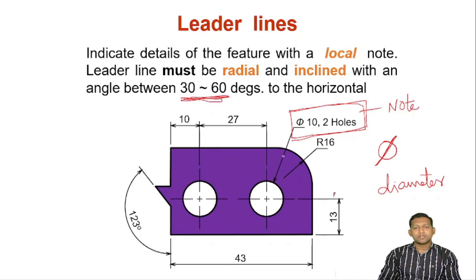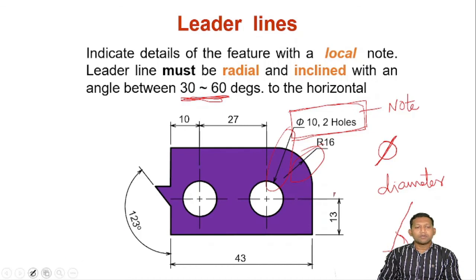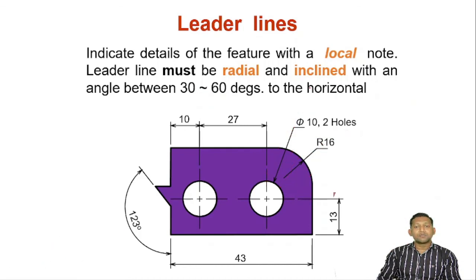To draw a leader line, it has to be somewhere between 30 and 60 degrees with respect to horizontal. There are two leader lines shown here — each within the 30 to 60 degrees range. One more important point: the leader line always ends with a horizontal line. That horizontal line can go to the right side or to the left side, but it must end with a horizontal line. On top of that horizontal line we write our note — whatever we want to specify regarding that particular circle or feature.